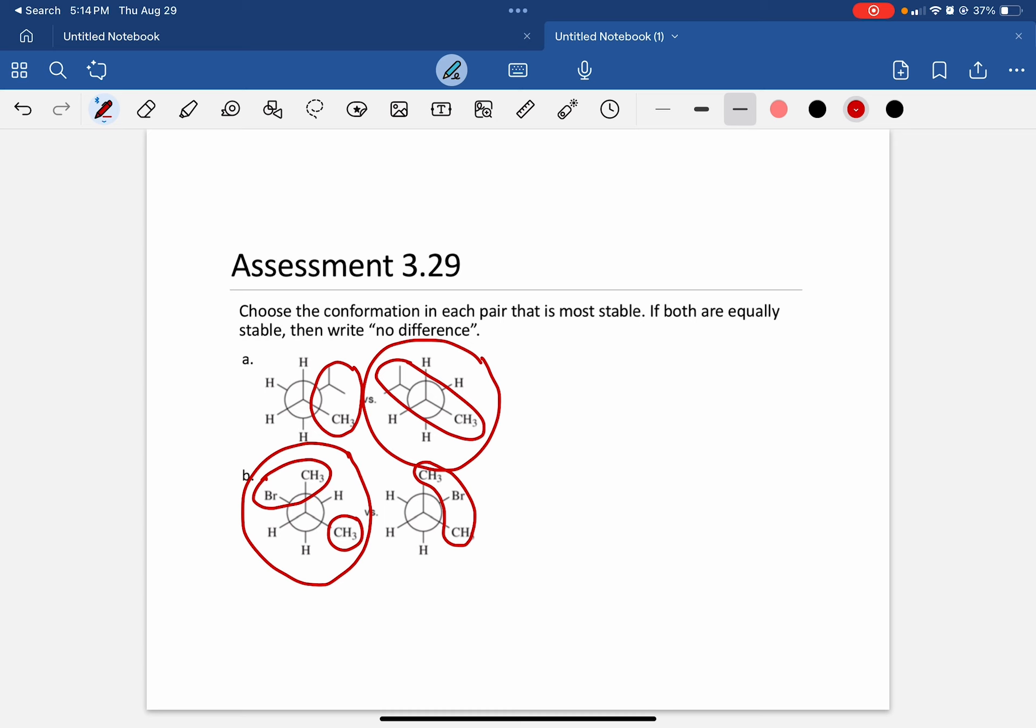So while they're both gauche conformation, gauche can have a range from being less stable to more stable. And in this case, the first one is a more stable gauche conformer than what the second one is, because all of the groups are right on top of each other, and that is going to cause clash. That's going to cause hindrance. So that's it for 3.29. Let me know if you have any questions.